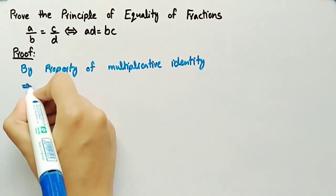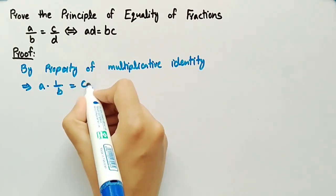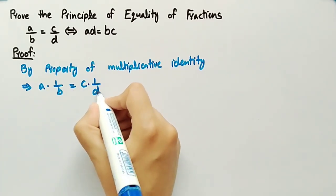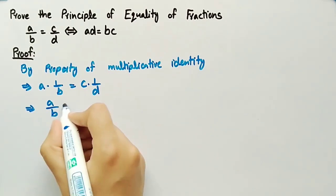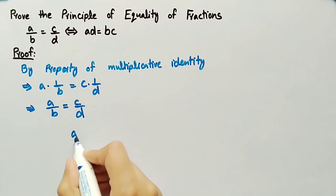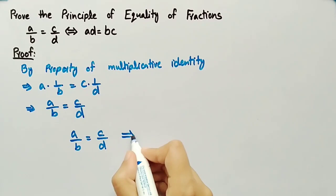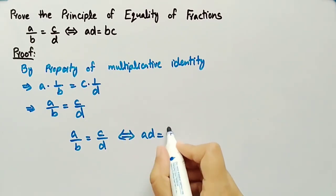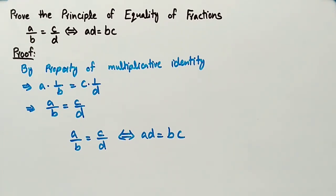So we can write a·(1/b) equal to c·(1/d), which can also be written as a/b = c/d. Hence we have proved that a/b = c/d if and only if a·d = b·c, which is the required proof of the principle of equality of fractions.